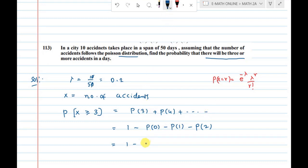P of 0 equals e power minus lambda lambda power 0 by 0 factorial. P of 1 equals e power minus lambda lambda power 1 by 1 factorial. P of 2 equals e power minus lambda lambda square by 2 factorial.